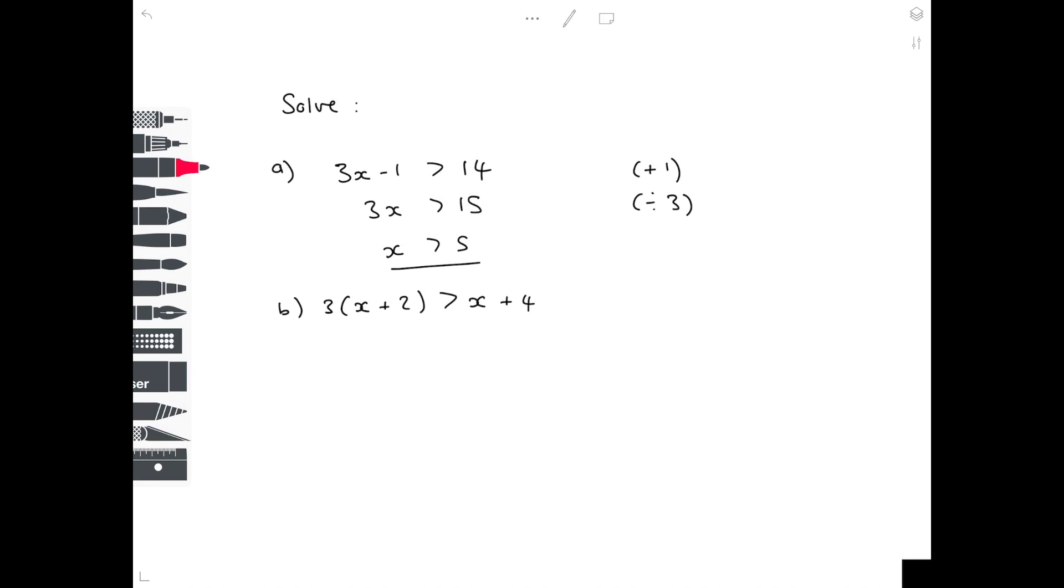3 brackets x plus 2 is greater than x plus 4. So let's simplify first of all by multiplying out that bracket. Let's move all the x's to the left hand side by taking away x from both sides, to get 2x plus 6 is greater than 4. Take away 6 from both sides to get minus 2. Divide by 2, and you get a value which is x is greater than minus 1.